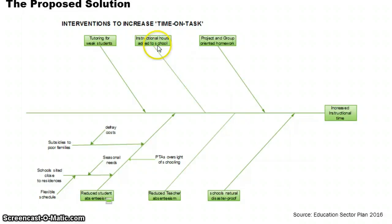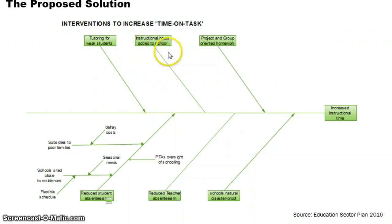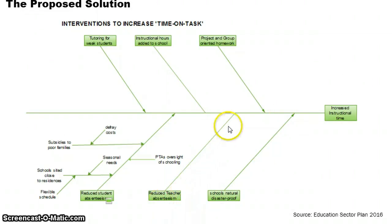Another contributing factor is instructional hours added to schools. I'm not aware of how many hours are currently spent in the classroom per week on, say, mathematics — whether it's three, four, or five hours — but the sector plan suggests an increase of instructional hours. Additional factors include tutoring for weak students, making schools natural disaster proof, and reducing teacher absenteeism.